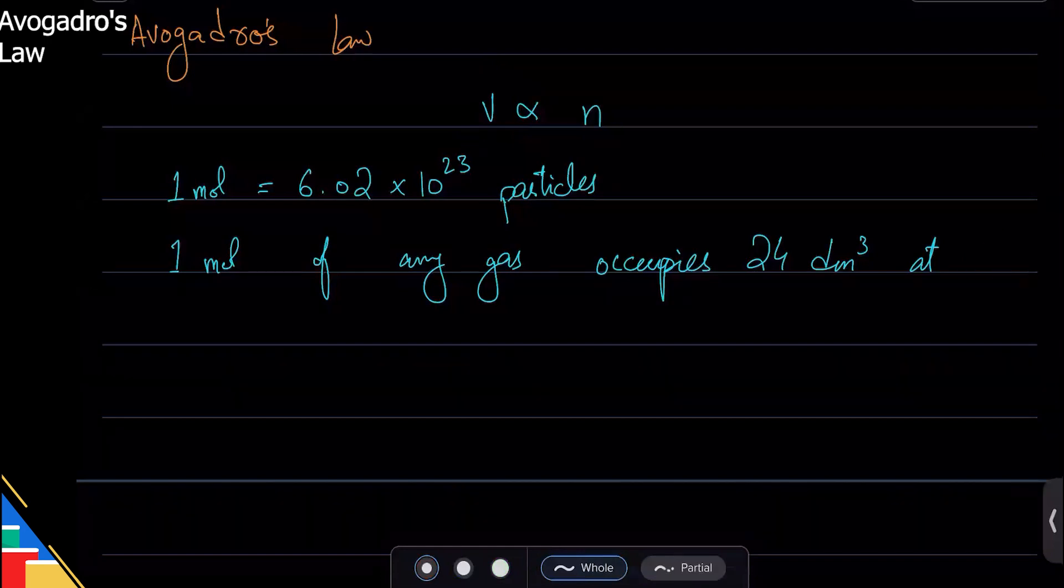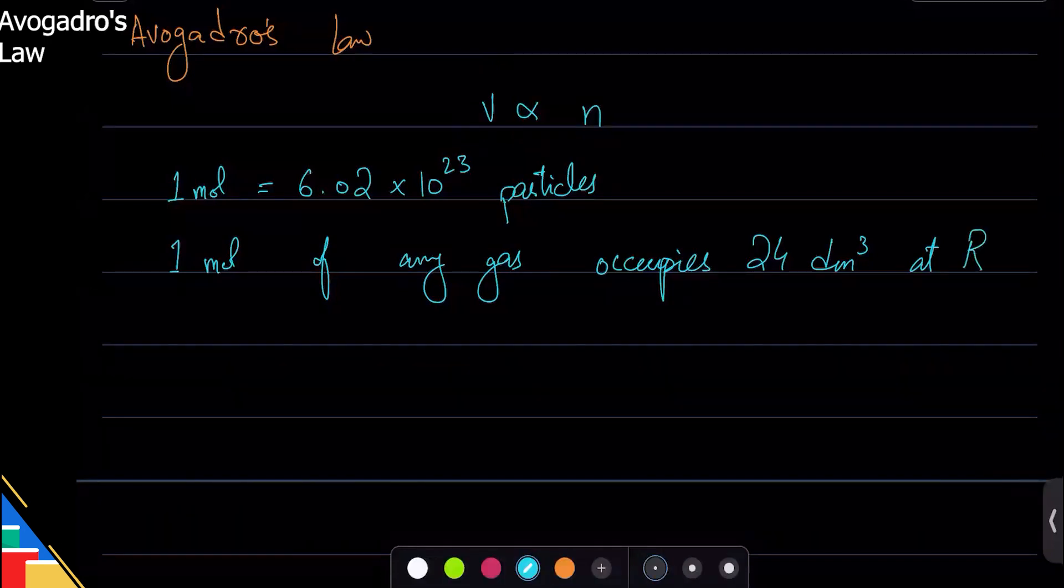Now, about RTP - what is this? Room temperature and pressure, that is 25 degrees Celsius and one atmospheric pressure. So these are the units for temperature and pressure. Of course you can use different units.